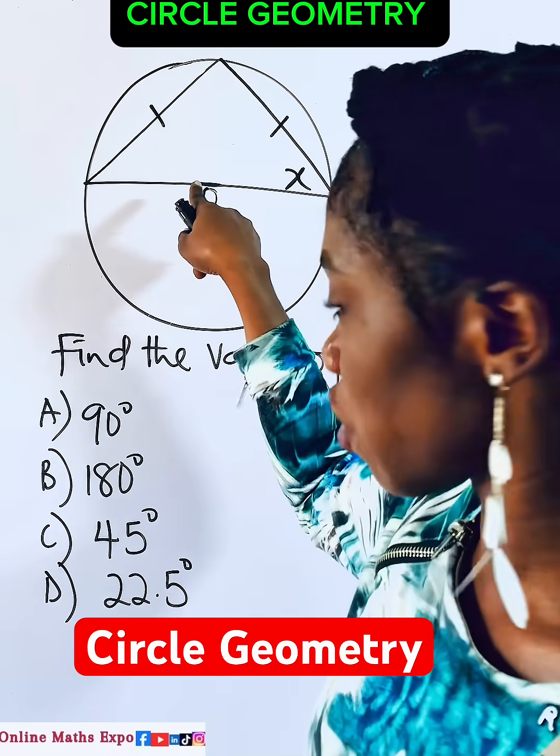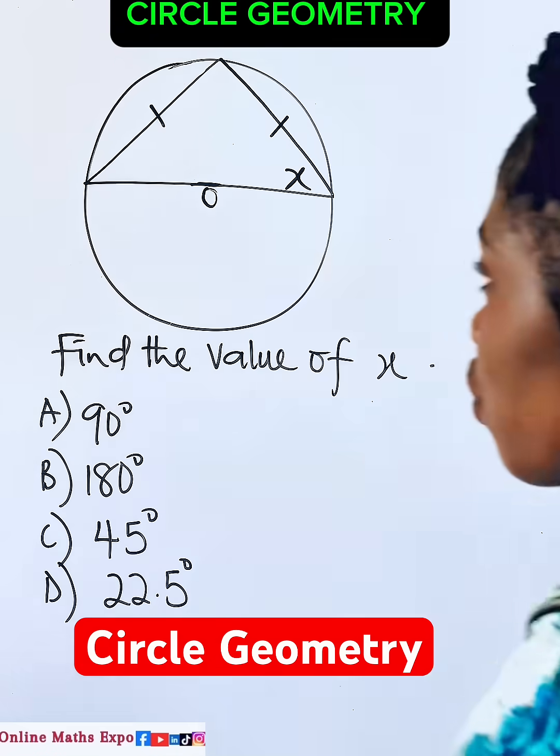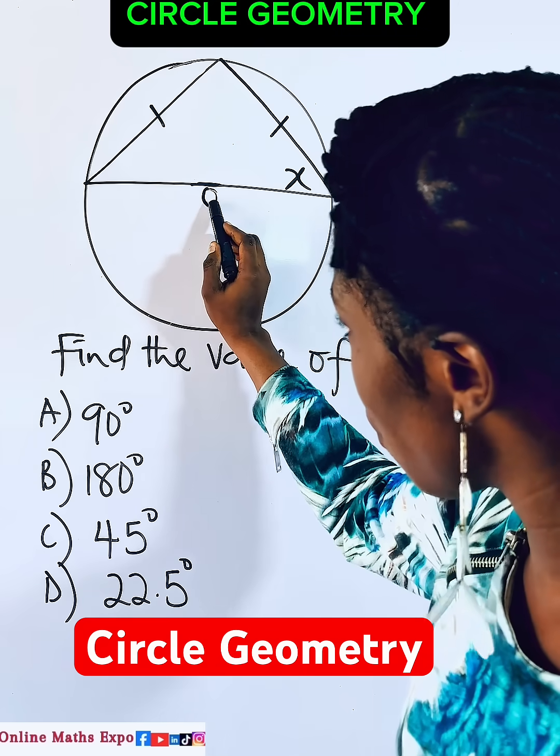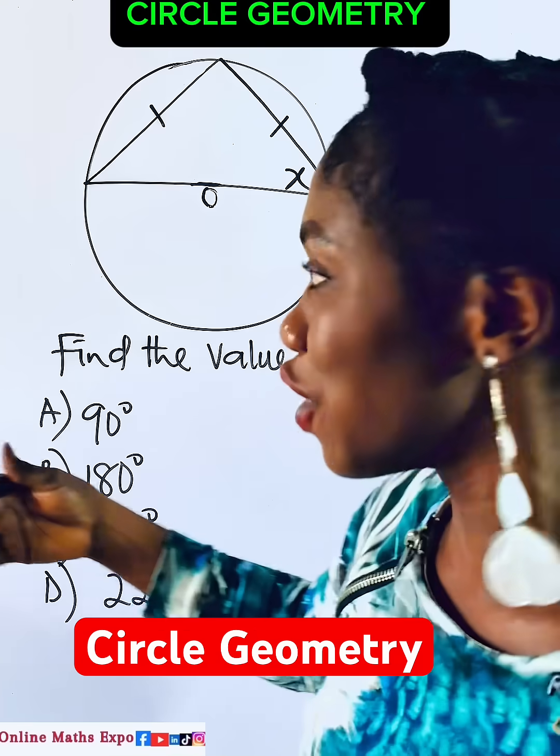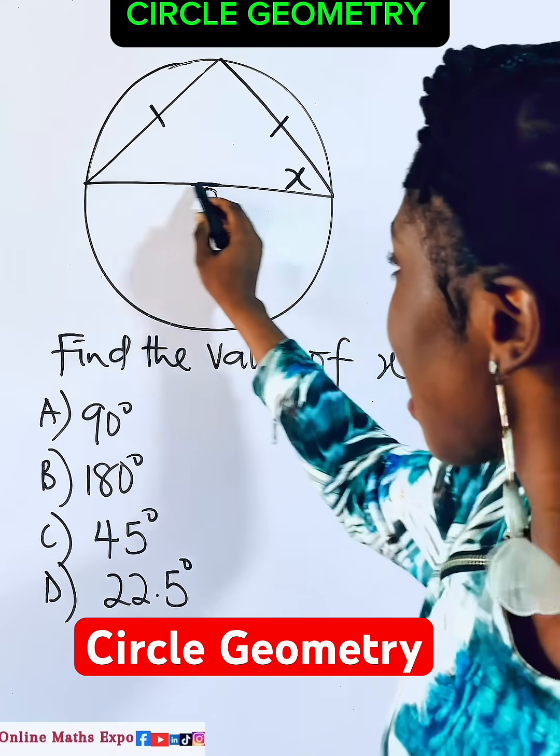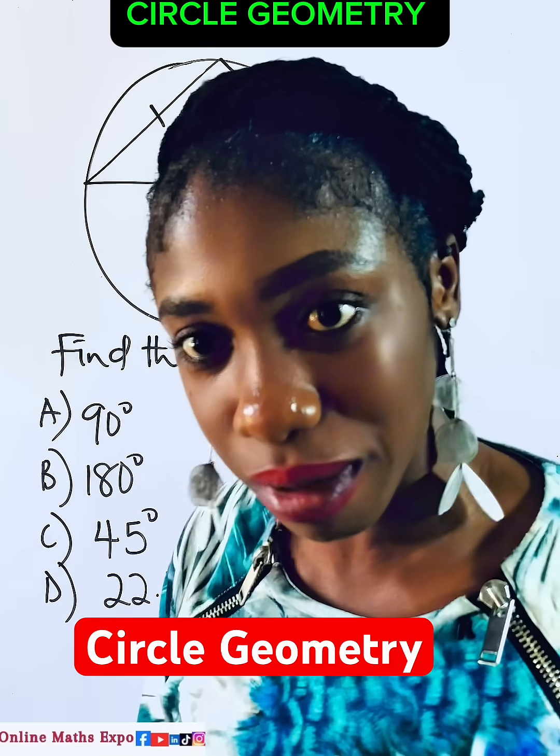When you see this, there's a theorem that supports this. So that theorem is what I remind you of. Now, what you just remember is that you see that this is the center, this O. Each time you see it in a circle, it just shows you that it's talking about center. And in that case, this line is the diameter because diameter divides the circle equally from the center.